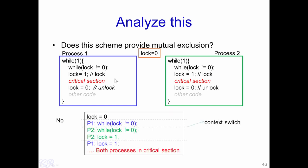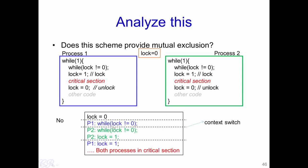The answer is no. Due to context switching between the two processes, we would reach a state sometimes when both processes execute in the critical section, and thus we will not be able to achieve mutual exclusion. For instance, lock has an initial value of 0. Suppose process P1 executes in the CPU and executes the while loop — since lock is 0, this particular while loop will break.